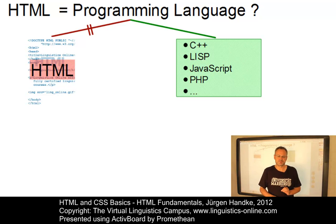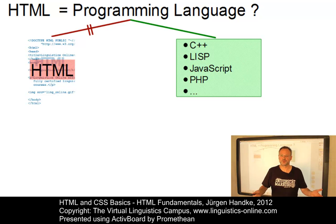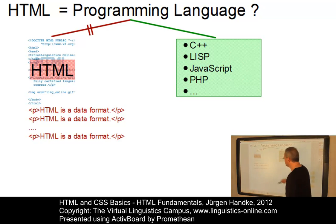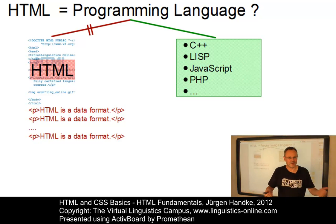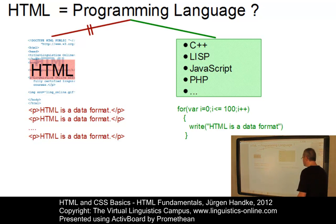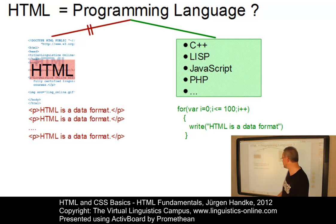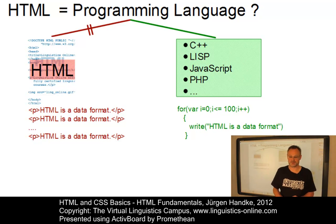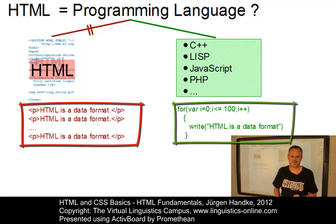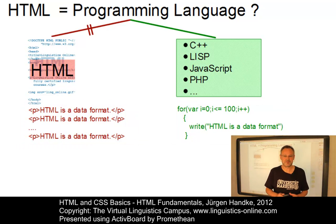Let's illustrate this with an example. Suppose you had to write down the line 'HTML is a data format' a hundred times. In HTML, you would in fact have to write down the line a hundred times to be presented in a web document a hundred times. In a programming language such as JavaScript or C++, you would write a loop which tells the computer what to do — in this case, to write down the line a hundred times on execution. So these examples clearly show that on the one hand we have a format, on the other hand we have a programming language. So HTML is a data format and not a programming language.